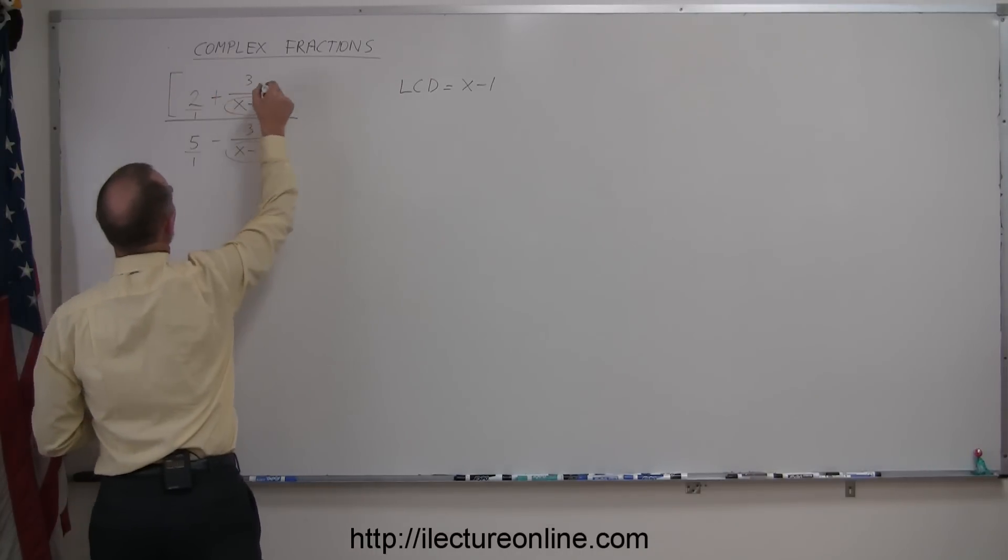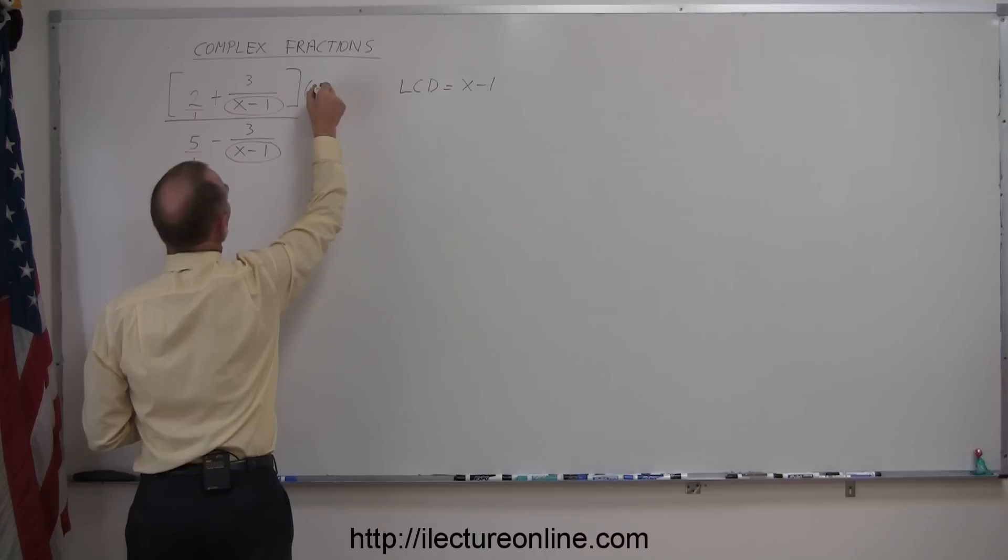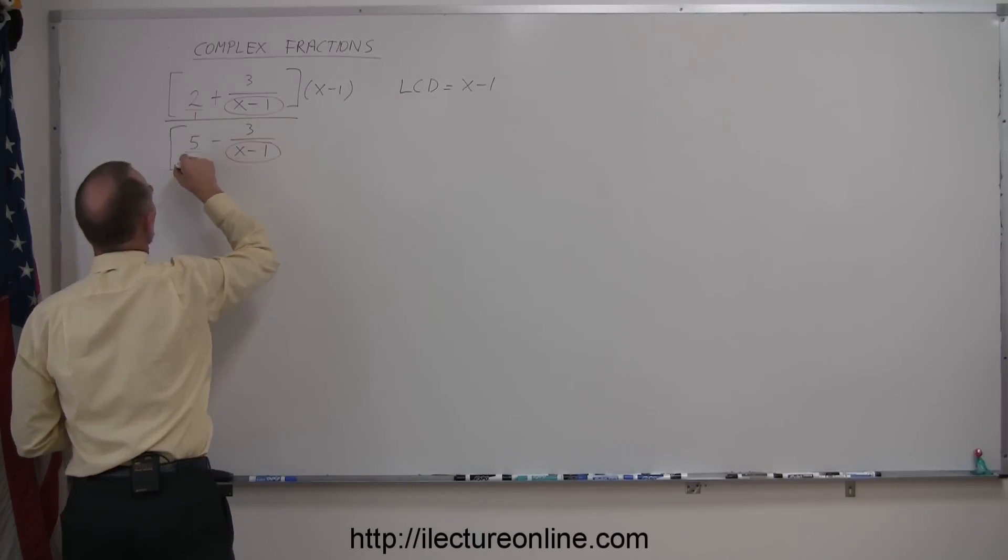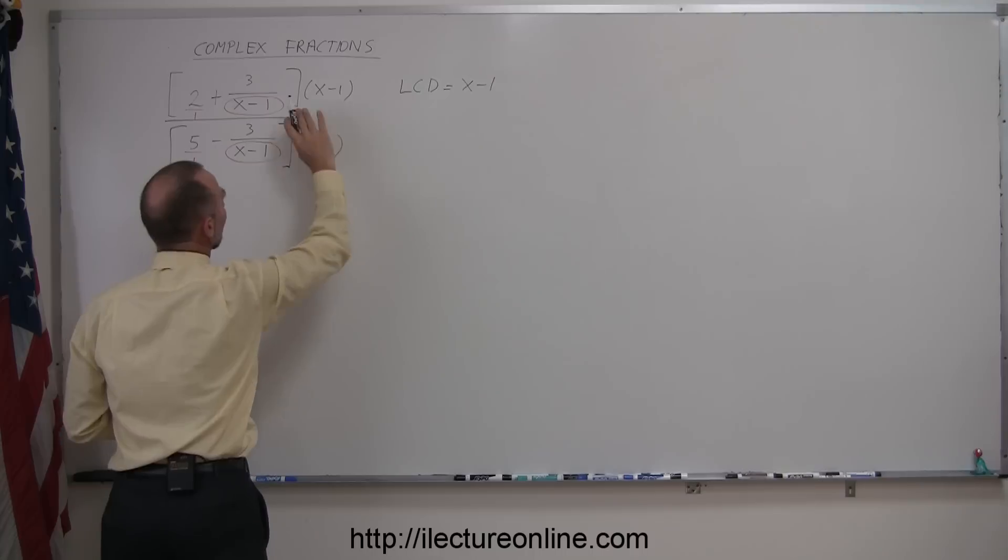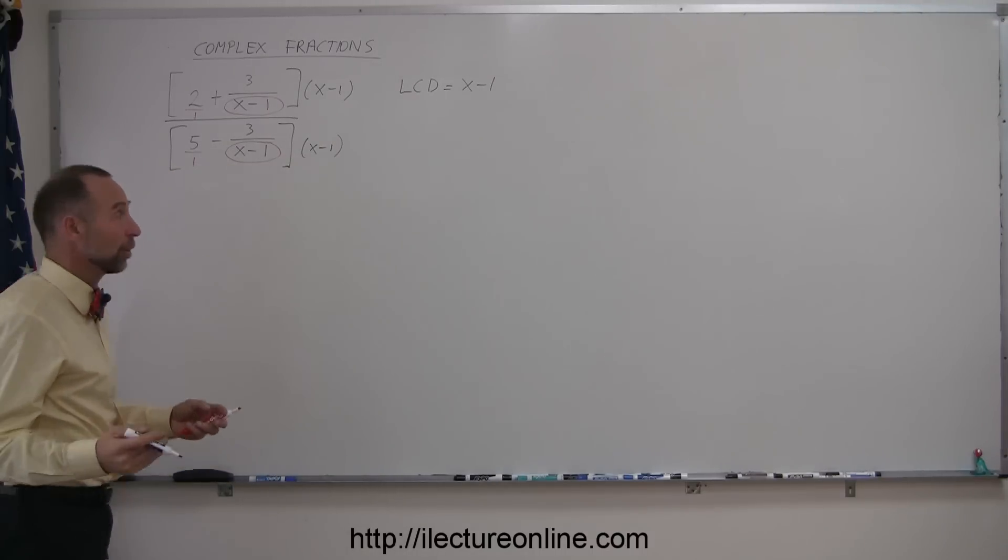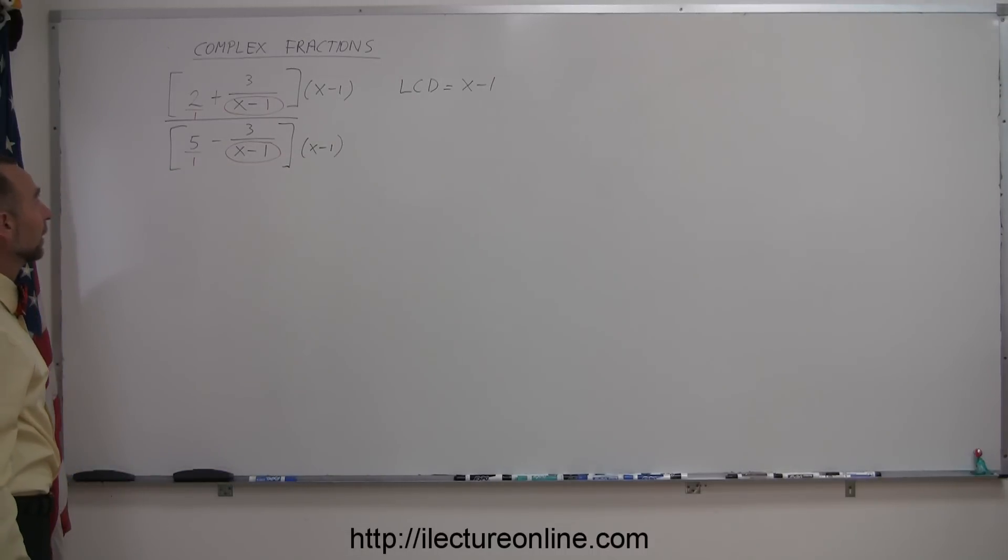So we can go ahead and put brackets here and say we're going to multiply that times x minus 1, and put brackets here and multiply the denominator by x minus 1. That's in essence the same as multiplying the whole thing by 1, and that works. We don't change the fraction that way.